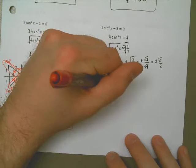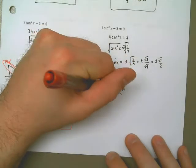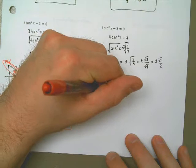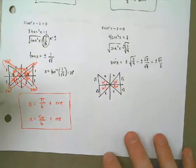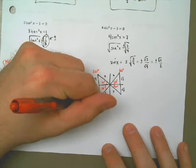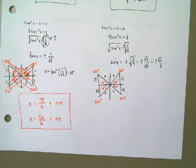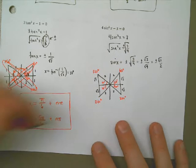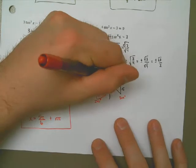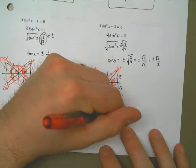My four solutions in degrees are 60 degrees, 120 degrees, 240 degrees, and 300 degrees. I need to convert to radians and account for infinite solutions. I see these two form a straight line, so I can combine those into one answer. I can say x is equal to 60 degrees plus some multiple of 180 degrees. I could say this one here is 120 degrees plus multiples of 180.